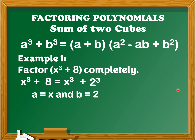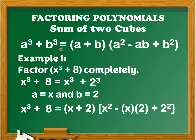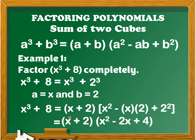After finding the value of a and b, we're going to determine the factors of x cubed plus 8. We get the value of a plus b, which is x plus 2. Next, we determine a squared, which is x squared, minus ab which is x times 2, plus b squared which is 2 squared. Simplifying: x plus 2 times the quantity of x squared minus 2x plus 4. Therefore, x cubed plus 8 equals the quantity of x plus 2 times the quantity of x squared minus 2x plus 4.